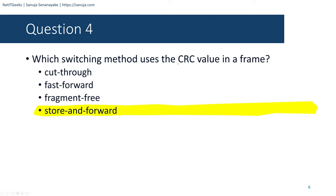Question number eighteen: What makes fiber preferable to copper cabling for interconnecting buildings? You need to pick three advantages. The correct answers are: greater distance per cable run; limited susceptibility to EMI and RFI — electromagnetic interference and radio frequency interference; and greater bandwidth potential, since a fiber optic cable can carry much higher bandwidth compared to copper cabling.